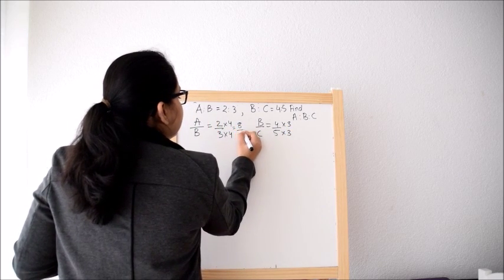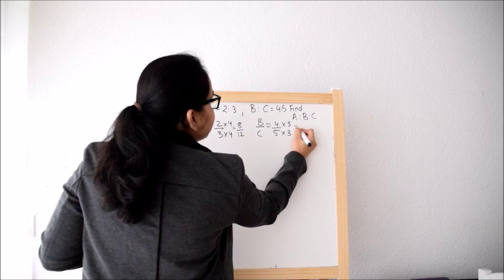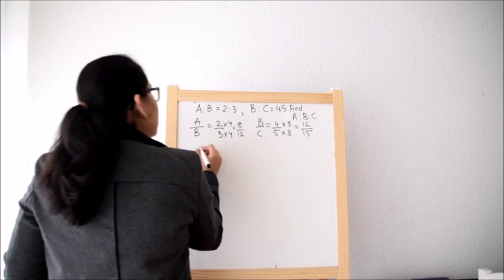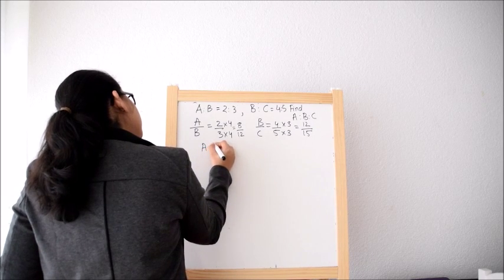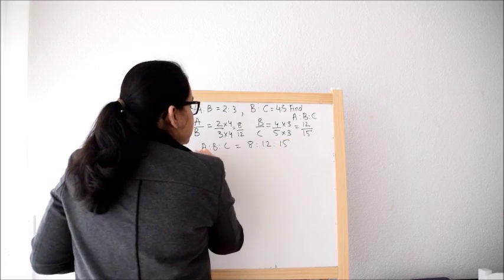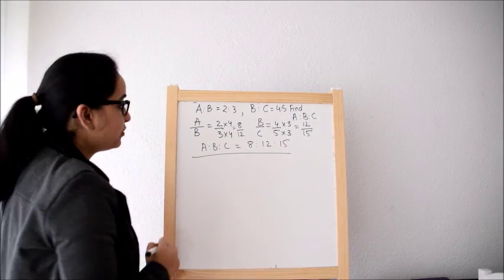So we will get 8 by 12 and here we will get 12 by 15. So the answer is A is to B is to C is equal to 8 is to 12 is to 15. So this was our answer.